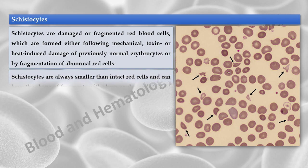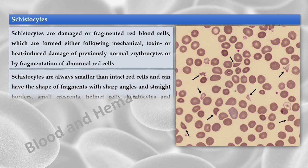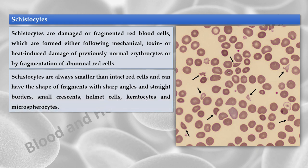Schistocytes are always smaller than intact red cells and can have the shape of fragments with sharp angles and straight borders, small crescents, helmet cells, keratocytes, and microspherocytes.